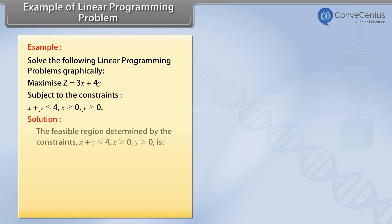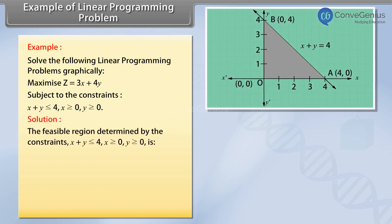Solution: The feasible region determined by the constraints X plus Y is less than or equal to 4, X is greater than or equal to 0, and Y is greater than or equal to 0, is given in the figure.